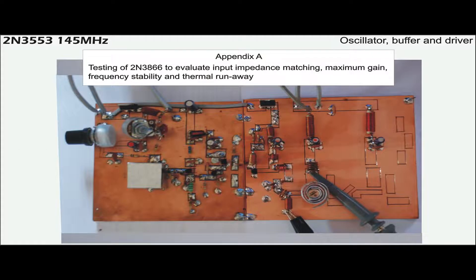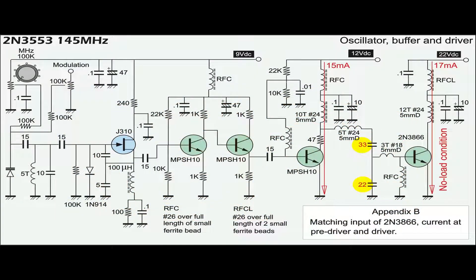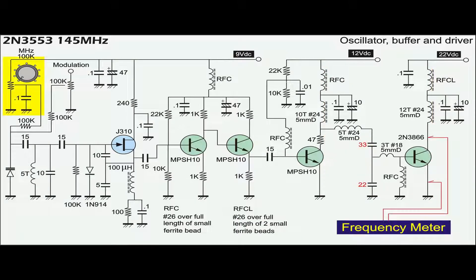First the 2N3866 from Taipei is tested in order to understand its behavior a little bit better. Its collector current at 22V is observed to be only 17mA. Now we will tune the oscillator to see how the Taipei driver transistor synchronizes itself.